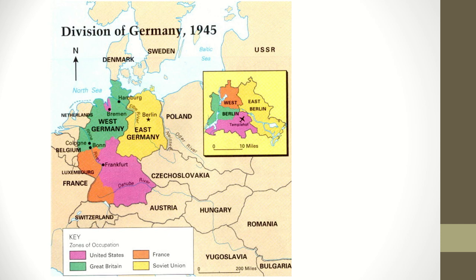In 1945, the division of Germany has two key components. First, the country itself is split between East Germany, controlled by the Soviet Union, and West Germany, influenced by the United States. But within East Germany is the capital of Berlin — a major German city the Americans did not want to give up entirely. So even though the city of Berlin is right in the middle of East Germany, the city itself was actually split in two, making it a central area of conflict between the two powers.